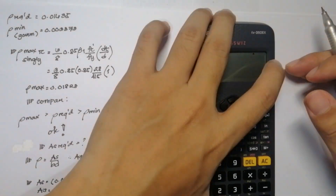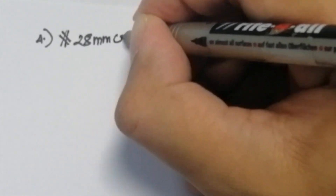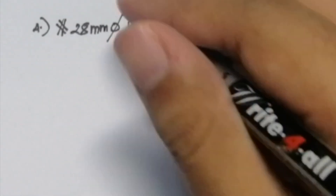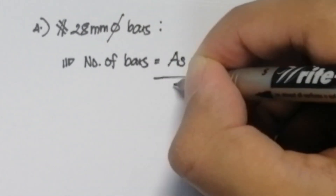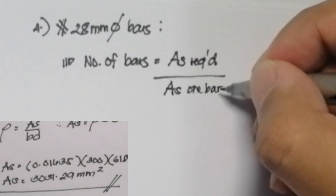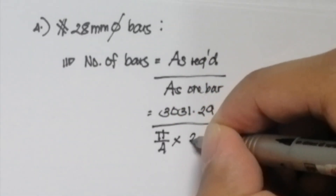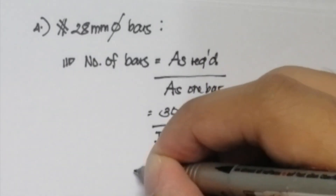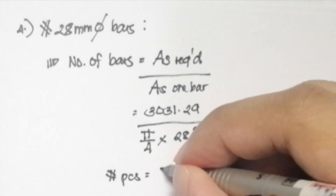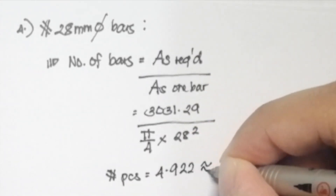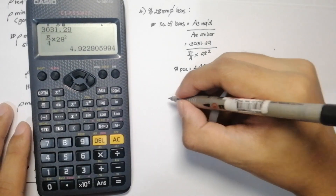For the fourth question, we need to find the number of 28mm diameter reinforcing steel bars needed. Using: n = AS_total / A_single bar = 3031.29 / (π/4 × 28²) = 4.92. Rounding up, the answer is 5 pieces.